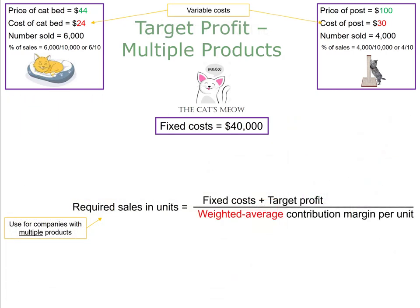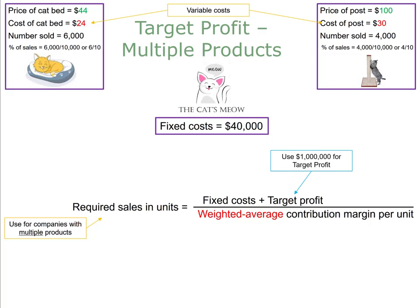We've shown how to calculate the break-even point for a company with multiple products. But if management asked how many units must be sold to reach an operating income of $1,000,000, you would use the same formula — but instead of setting the target profit to zero, you would set it to $1,000,000.